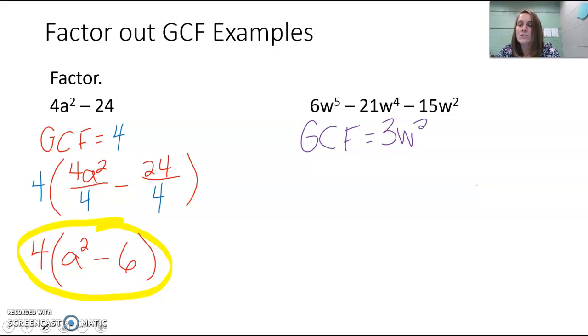So I'm going to take out that 3w squared. And when I do that, I would take 6w to the 5th and I would divide that, and I'll show that in a second.